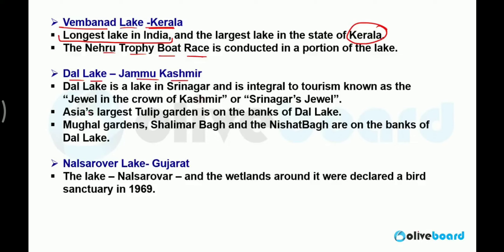Dal Lake is situated in Jammu and Kashmir. It is known as the jewel of the crown of Kashmir. Asia's largest tulip garden is situated on the bank of Dal Lake. Mughal Garden, Shalimar Bagh, and Nishat Bagh are all situated on the banks of Dal Lake, making it very famous for tourism.